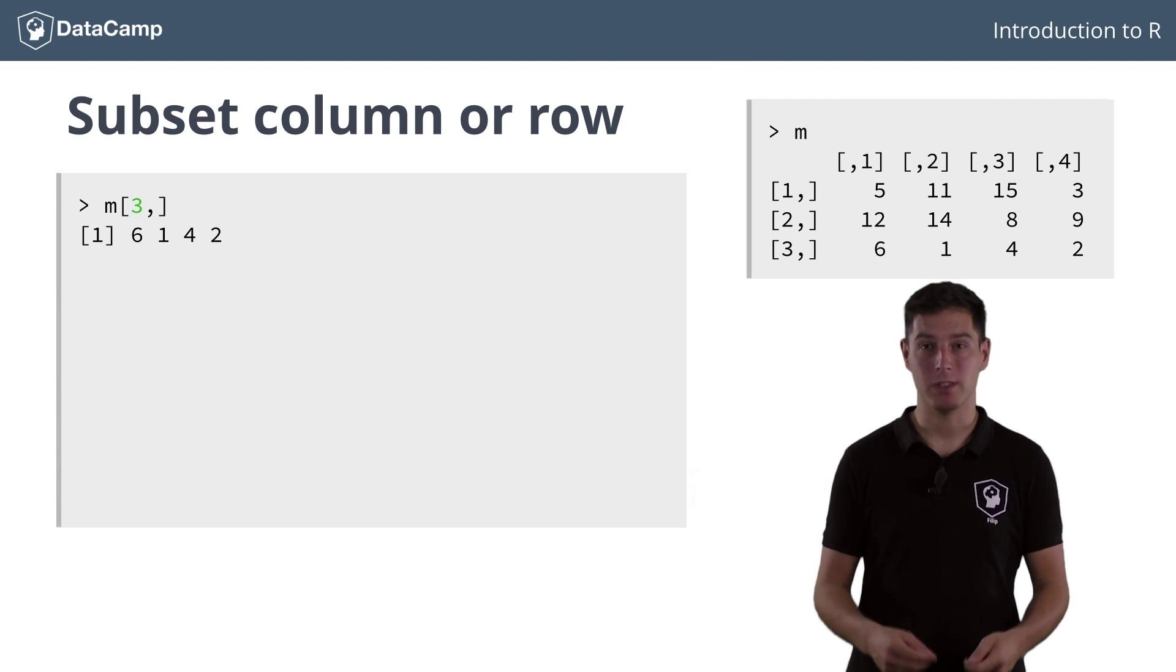Notice here that the result is not a matrix anymore. It's also a vector, but this time one that contains more than one element. You selected a single row from the matrix, so a vector suffices to store this one-dimensional information.